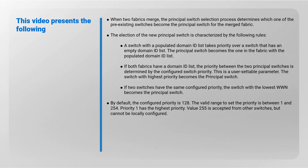The switch with the highest priority becomes the principal switch. If two switches have the same configured priority, the switch with the lowest WWN becomes the principal switch. By default, the configured priority is 128. The valid range to set the priority is between 1 and 254 — priority 1 has the highest priority. The value 255 is accepted from other switches but cannot be locally configured.